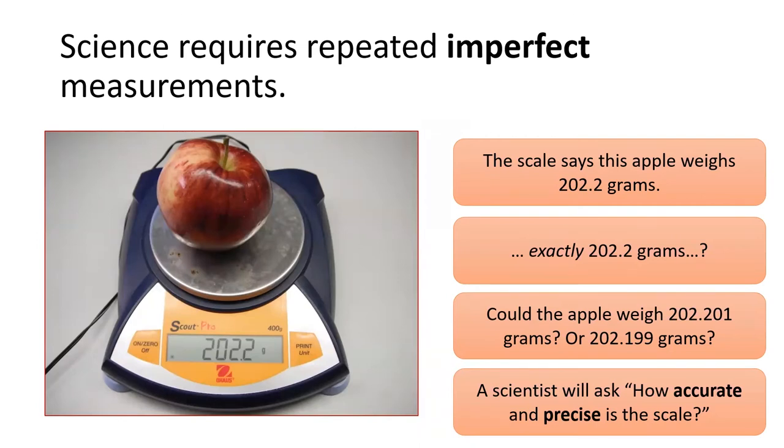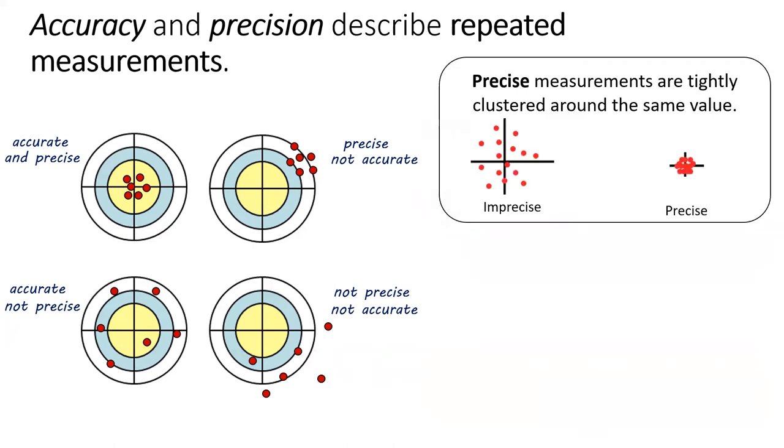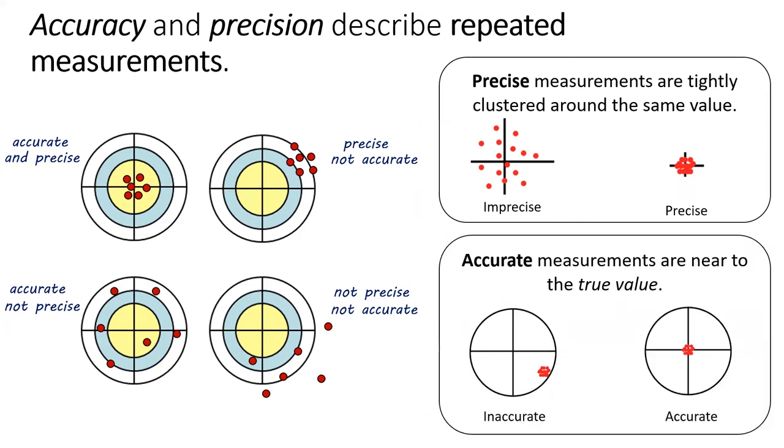Scientists want to know how accurate and precise any given measurement is. The terms accuracy and precision are meaningless without repeated measurement. A series of precise measurements will be tightly clustered. To determine the accuracy or precision of a measurement, we need to make multiple trials, while imprecise measurements will have a lot of variation. A series of accurate measurements will be close to the true value. If we take the average of many accurate measurements, we will arrive at the true value or at least nearby.